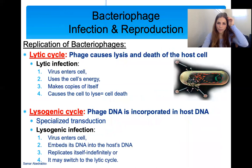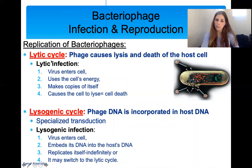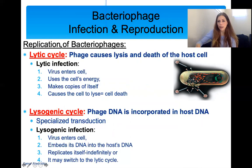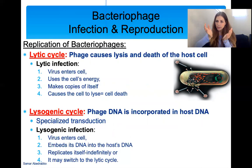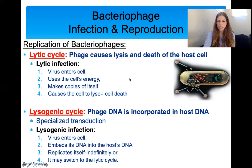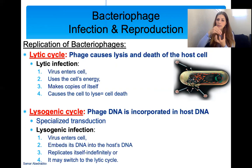There are two different cycles for how phages replicate in bacteria: the lytic cycle and the lysogenic cycle. In the lytic cycle, phages cause bacteria to lyse, meaning burst — and if a cell bursts or lyses, it dies. So the lytic cycle causes bacteria to die. The virus or phage enters the bacterial cell, uses the cell's energy to make copies of itself, and then causes the bacterial cell to lyse.